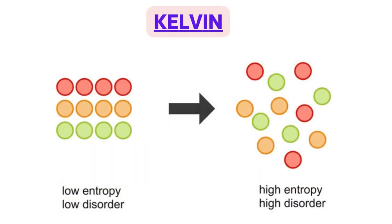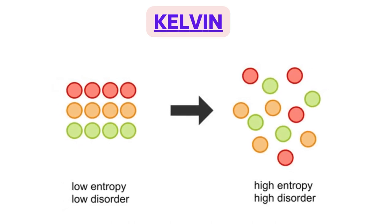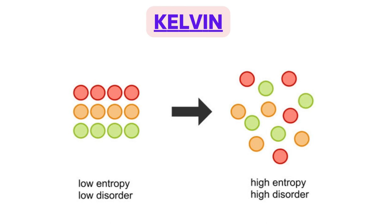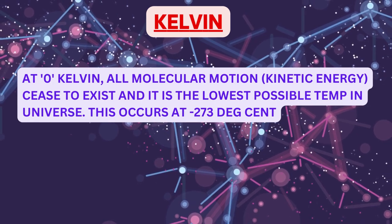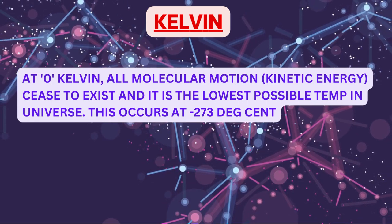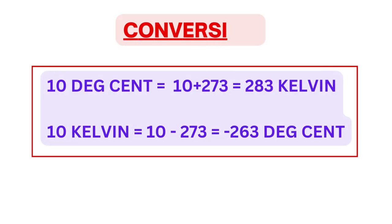What is Kelvin? This scale of temperature measurement has been taken from thermodynamics in physics. It is an absolute scale and not relative like degree centigrade and degree Fahrenheit. Since temperature is a measure of average kinetic energy of atoms or molecules, at 0 Kelvin all molecular motion — that is the kinetic energy — cease to exist. It is the lowest temperature possible in the universe, occurring at minus 273 degree centigrade.